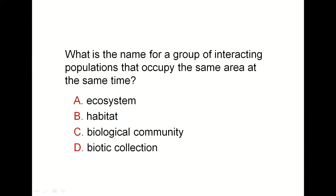Next: what is the name for a group of interacting populations? Life is divided into levels from broadest to most specific: biosphere contains biomes, each biome contains ecosystems, each ecosystem contains communities, and each community includes populations. A population is a group of individuals of the same species living in the same time and area. So a group of populations is a community — a biological community. A group of communities would mean ecosystem.